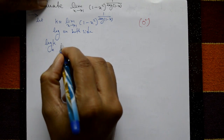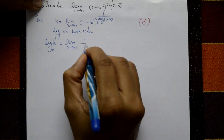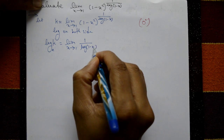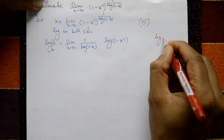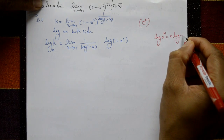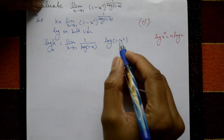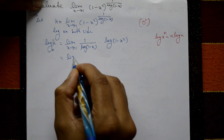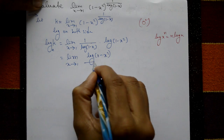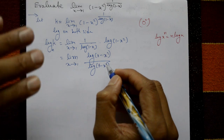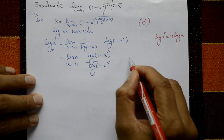Taking log on both sides: log k equals the limit as x tends to 1 of (1 upon log(1 minus x)) into log(1 minus x squared). Using the log property log(x^n) = n log x, this simplifies to the limit of log(1 minus x squared) divided by log(1 minus x). Applying x equals 1 gives log 0 over log 0, which is infinity by infinity.